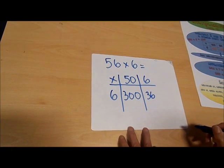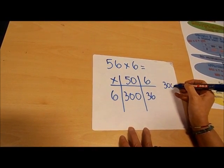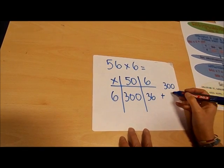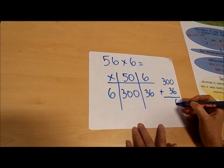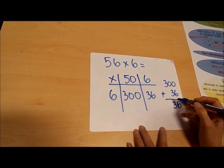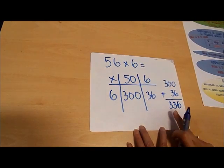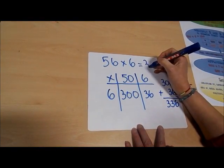Now I have to add these two numbers together, so I have 300 plus 36. So my answer is 336. I'm going to put that up here to complete my sum.